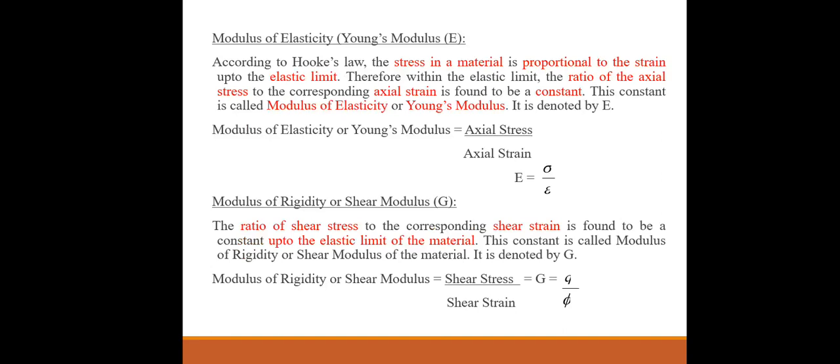Modulus of elasticity or Young's modulus. According to Hooke's law, the stress in a material is proportional to the strain up to the elastic limit. Therefore, within the elastic limit, the ratio of axial stress to the corresponding axial strain is found to be a constant. This constant is called modulus of elasticity or Young's modulus, denoted by E. Young's modulus E equals axial stress divided by axial strain.